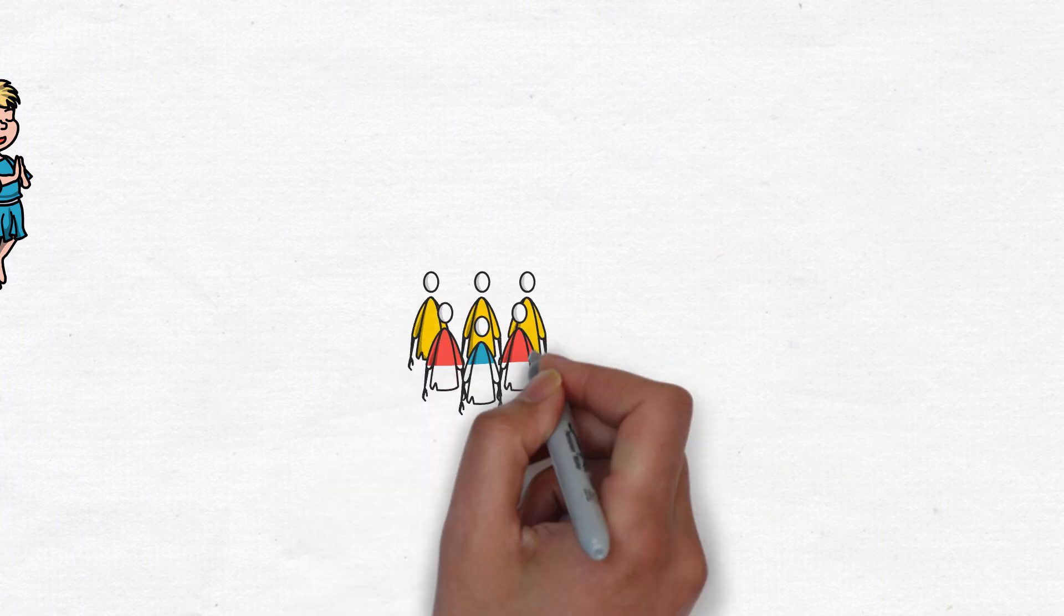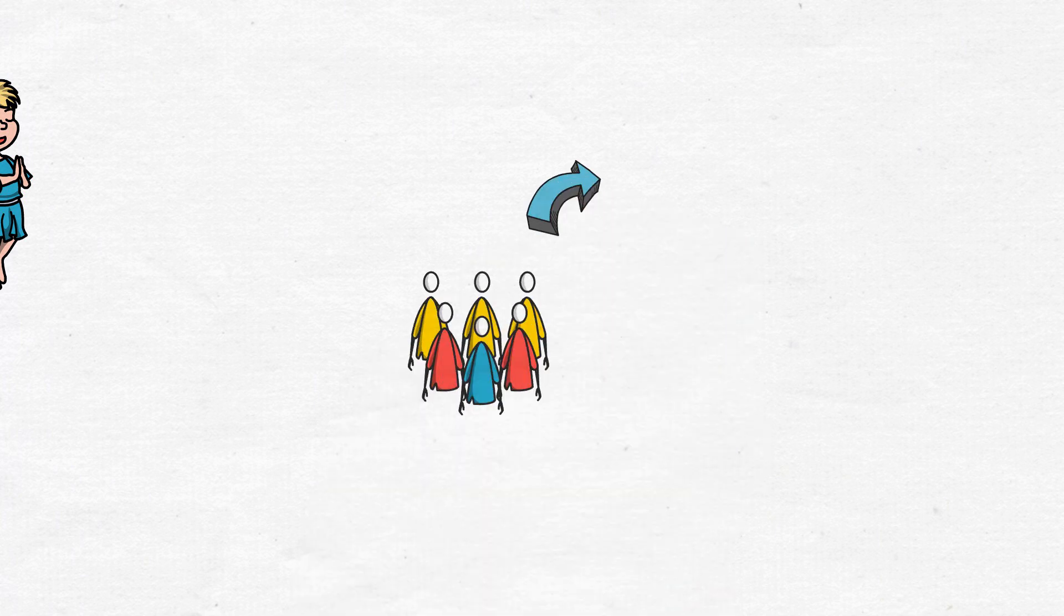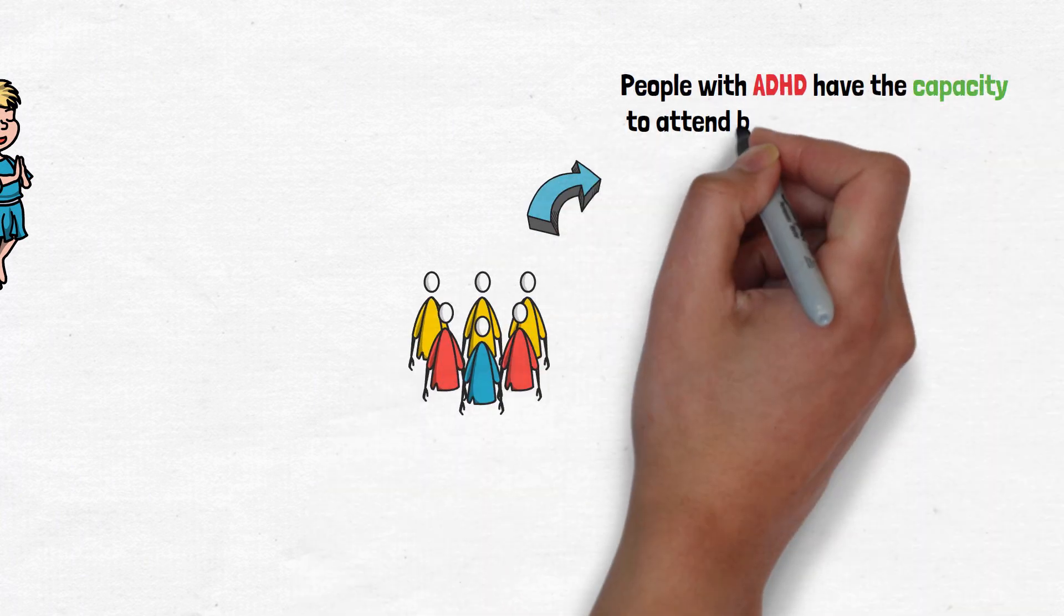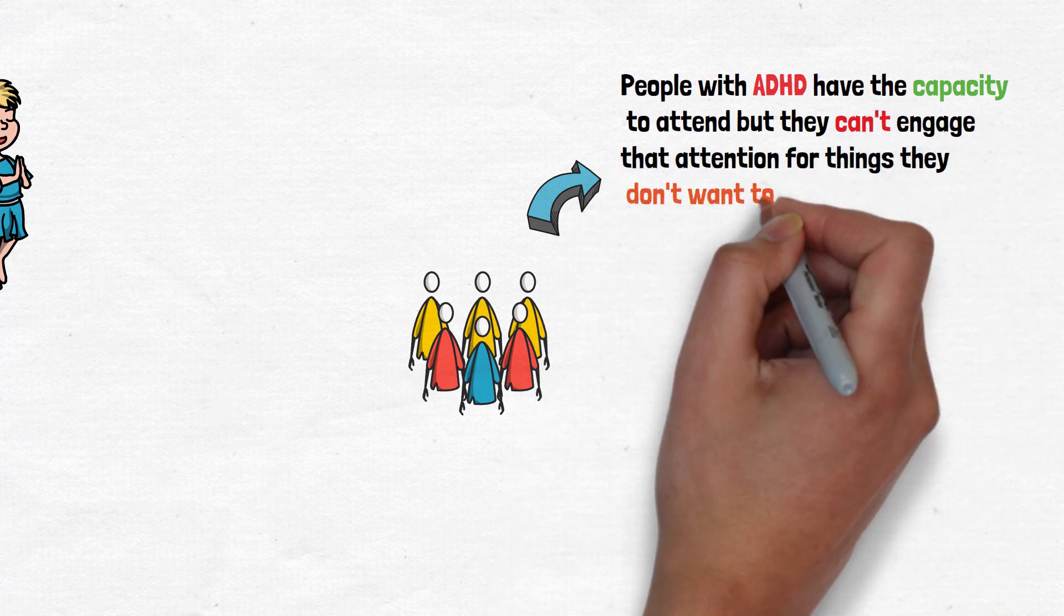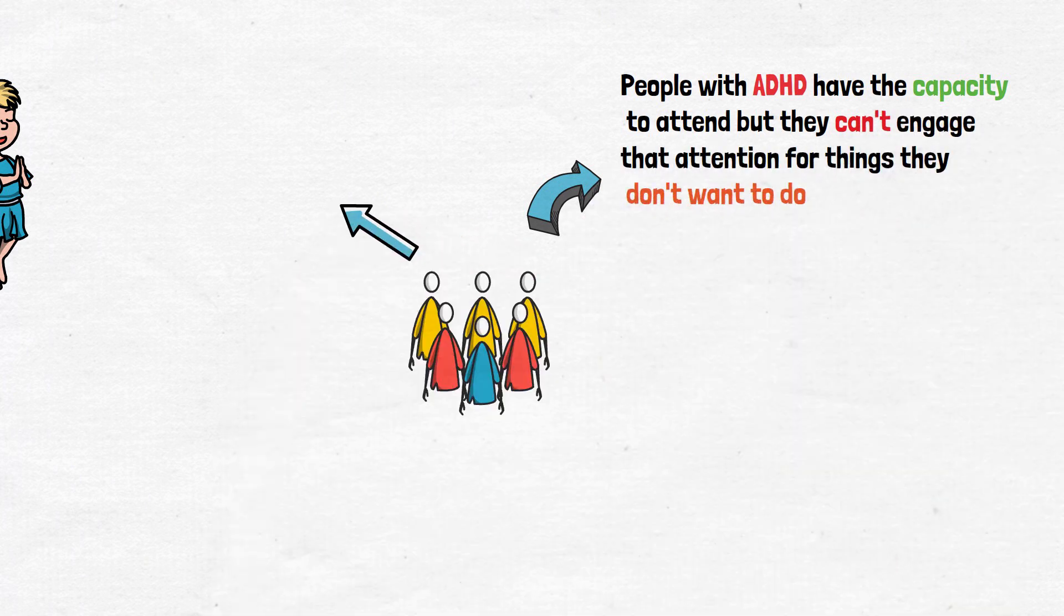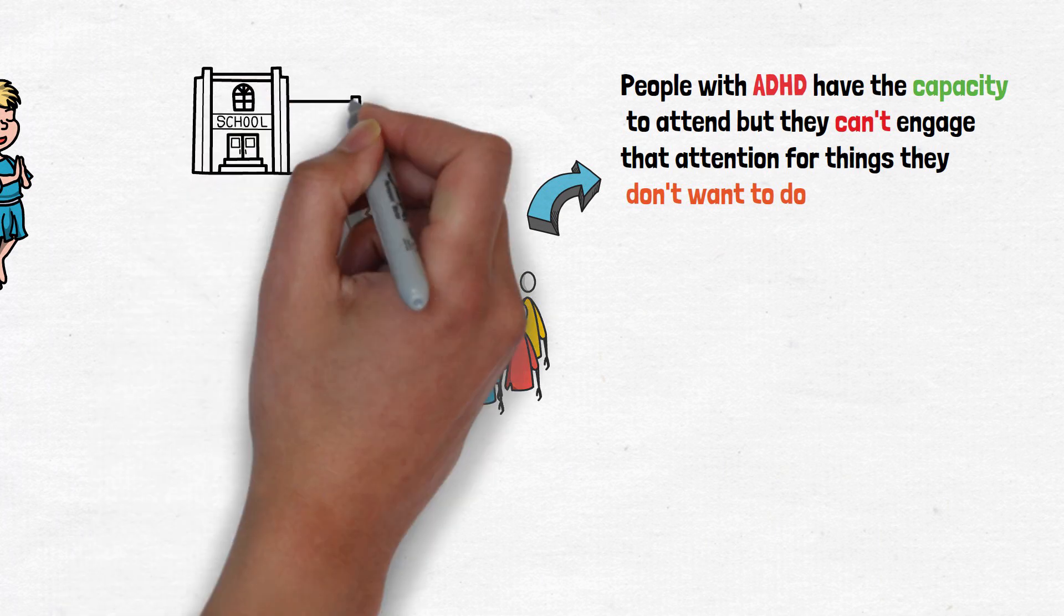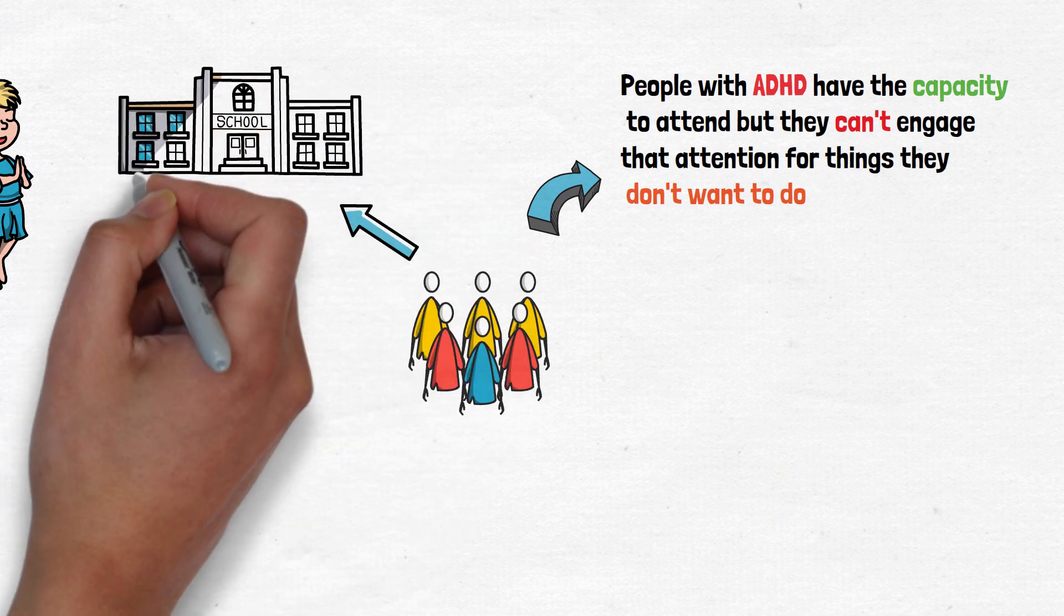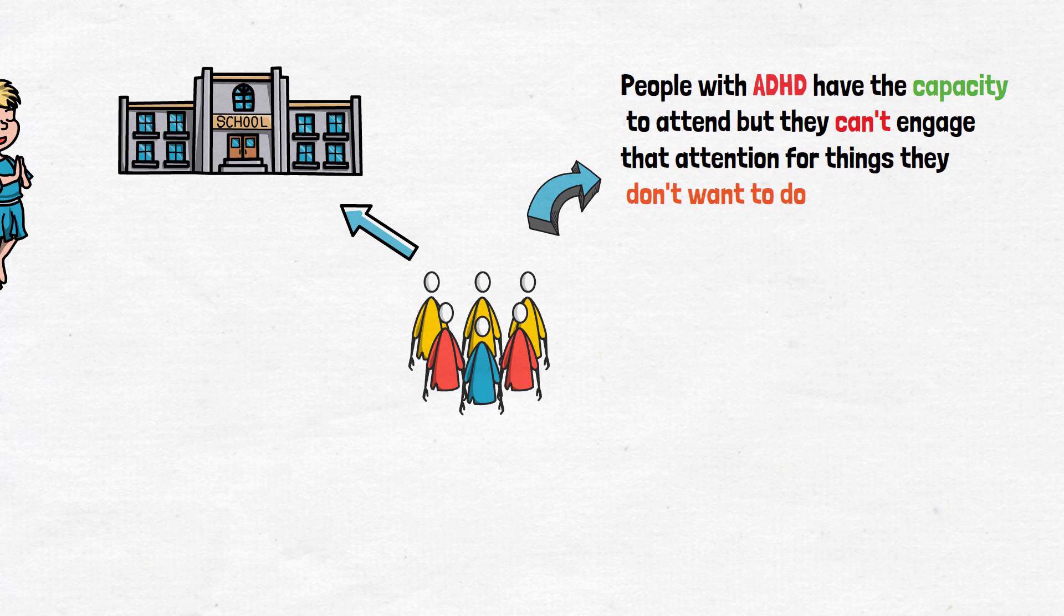So that tells us that people with ADHD have the capacity to attend, but they can't engage that attention for things that they don't really want to do. And as we all know, much of life, whether or not you're a child or an adult, involves doing a lot of things that we don't want to do.